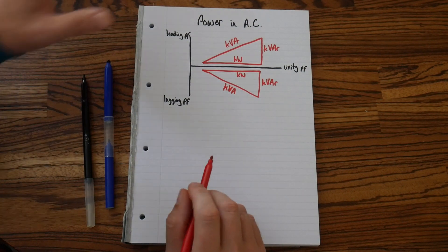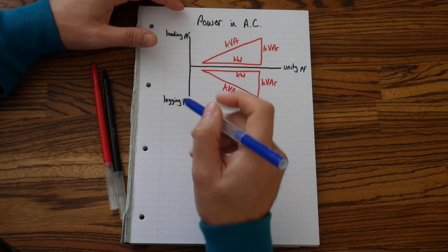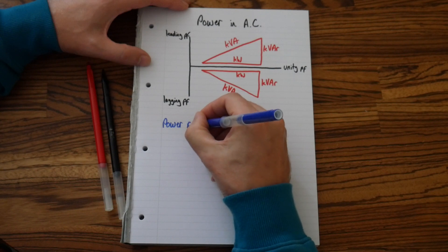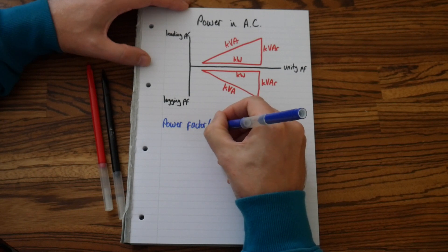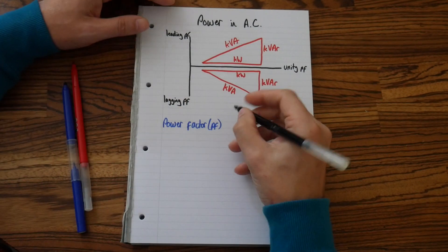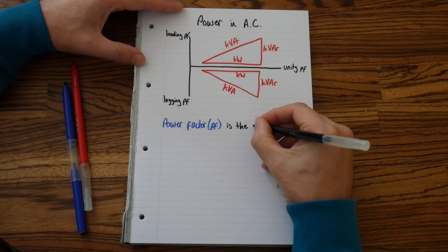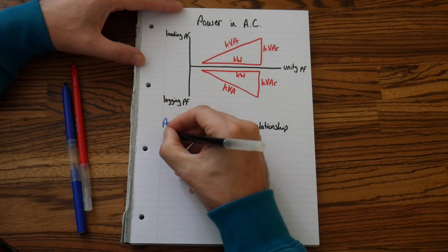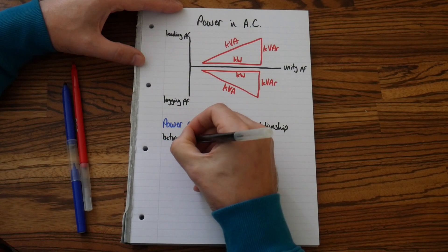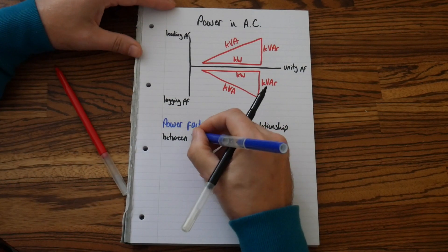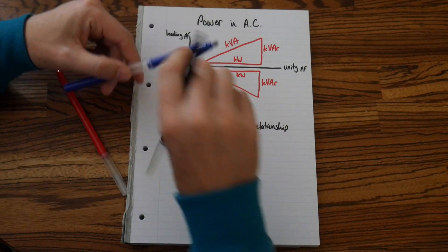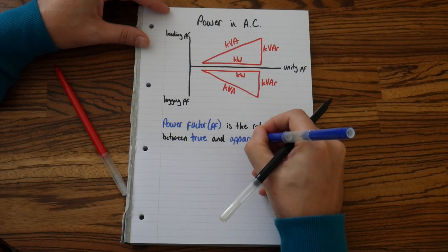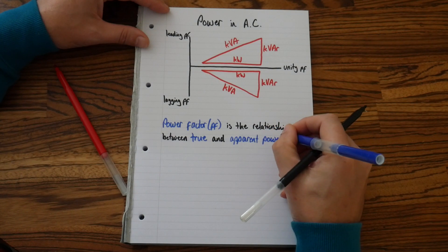Now let's write a little bit here. Let's change the color pen. Power factor, or PF, is the relationship between true and apparent power.